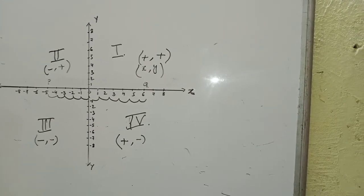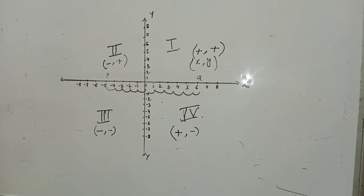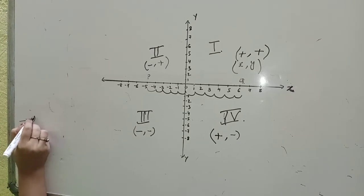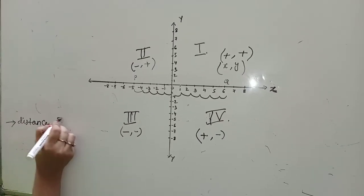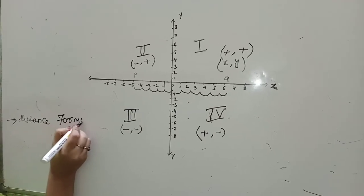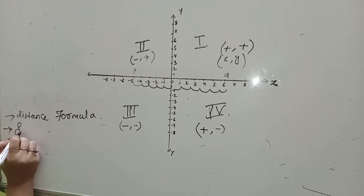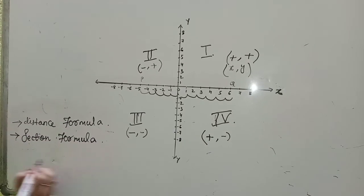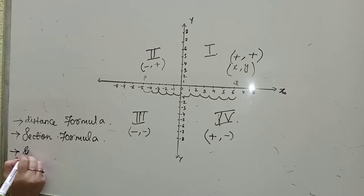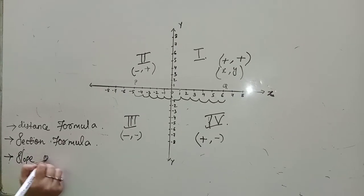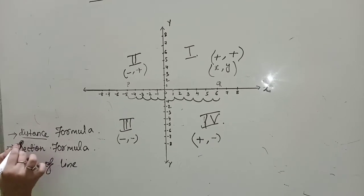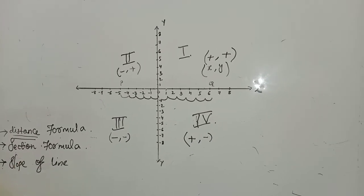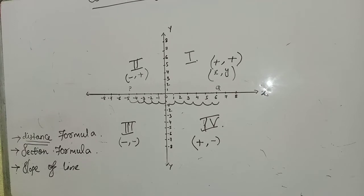In coordinate geometry as we study in 10th standard, there are three formulas: the first is the distance formula, the second one is the section formula, and the third one is the slope formula. For the distance formula, we have to find out the distance between two coordinates, and for this we have a formula.